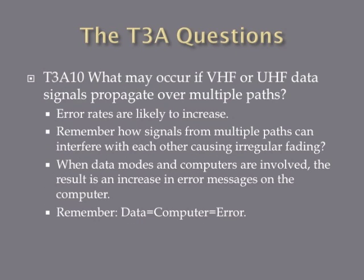What may occur if VHF or UHF data signals propagate over multiple paths? The answer is error rates are likely to increase. Signals from multiple path lengths can interfere with each other and cause irregular fading. When that happens in data modes, it increases the error rate on the message you're sending. Think: data equals computer, which equals error.